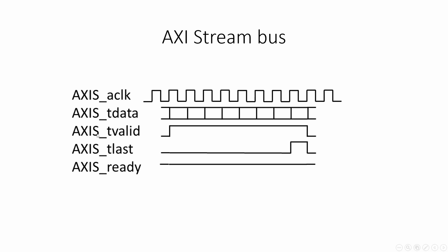There is the valid signal, which indicates that the data is valid and this actually starts the write DMA. It has the last signal, indicating that this is the last valid data in this stream, and this can actually stop the DMA even though it was programmed for more data.